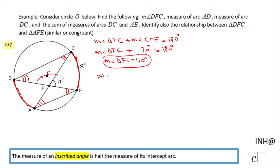The measure of angle D will be half of its intercept arc, which is CE, and that will be 80 divided by 2, that will be 40 degrees. So this angle here is 40 degrees.